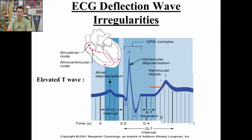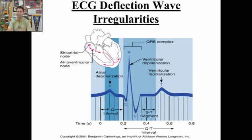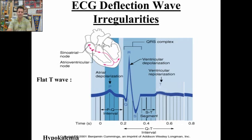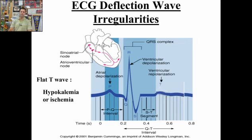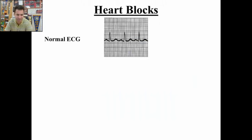An elevated T-wave is typically reflective of hyperkalemia — excess potassium in your bloodstream. If your T-wave is too flat, it's the opposite: hypokalemia. A flat T-wave is also reflective of ischemia, since the T-wave represents ventricular repolarization and we have a hard time repolarizing because of lack of blood flow — ischemia being lack of blood flow.